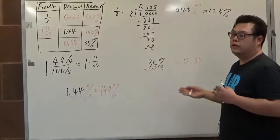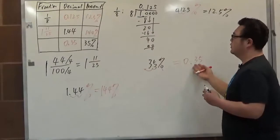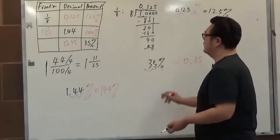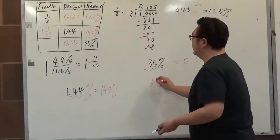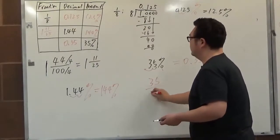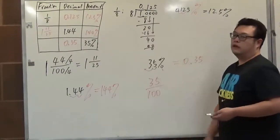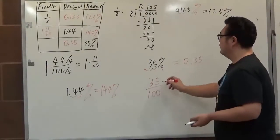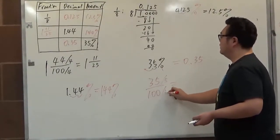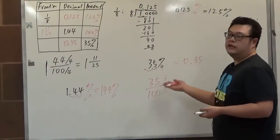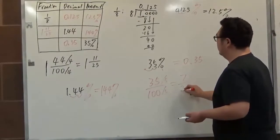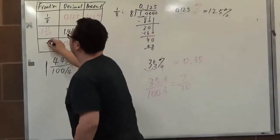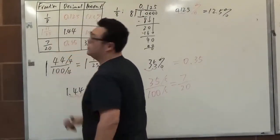As we moved forward we just go backward to get the decimal form. And if we go back to the fraction, by definition the percentage is just the number over 100. We put 35 over 100, and clearly there's a factor of 5 inside. So we divide by 5 to reduce that fraction and get 7 over 20.